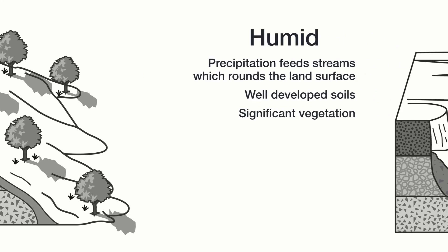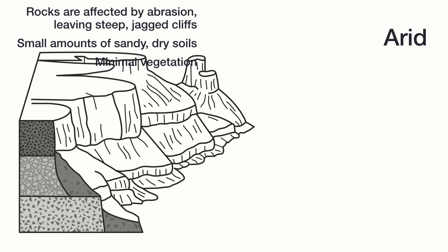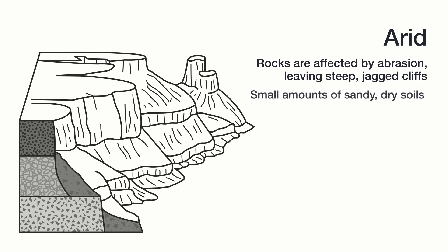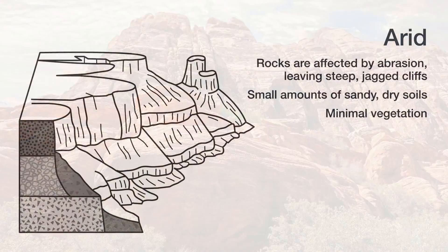But what if we were to look at an arid climate? Well, these look very different. The rocks tend to be affected by abrasion caused by wind rather than water, and this leaves us with steep and jagged cliffs. We tend to have small amounts of sandy, dry soil and very minimal vegetation. As a result, an arid landscape may look like this — notice steep, jagged, worn-down cliffs, very little vegetation and soil.